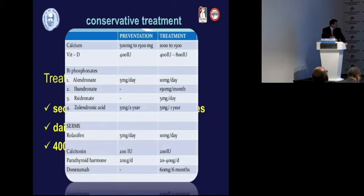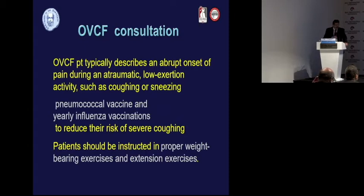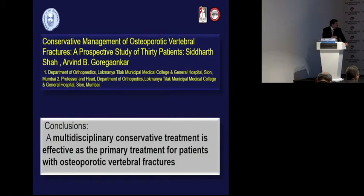Bisphosphonates have very significant problems and there is a tendency not to use them. Calcitonin and teriparatide are preferred options. In addition, patients must modify their activities and be careful. Yearly influenza vaccinations are important because these patients are at risk of falls and fractures. We must search for underlying diseases. Psychiatric consultation as well as rheumatology referral is appropriate. A multidisciplinary approach is key for this population.